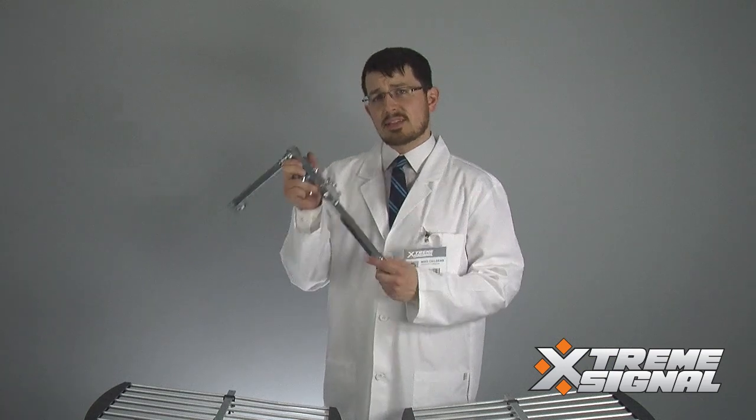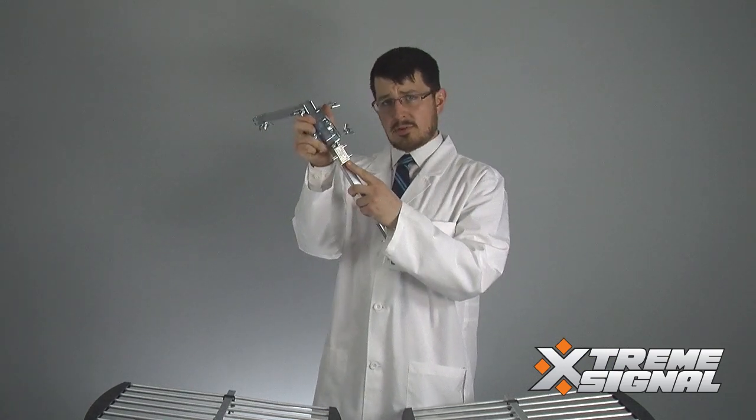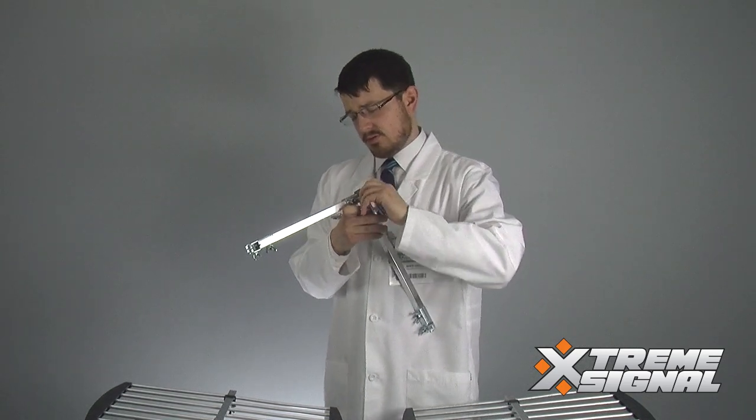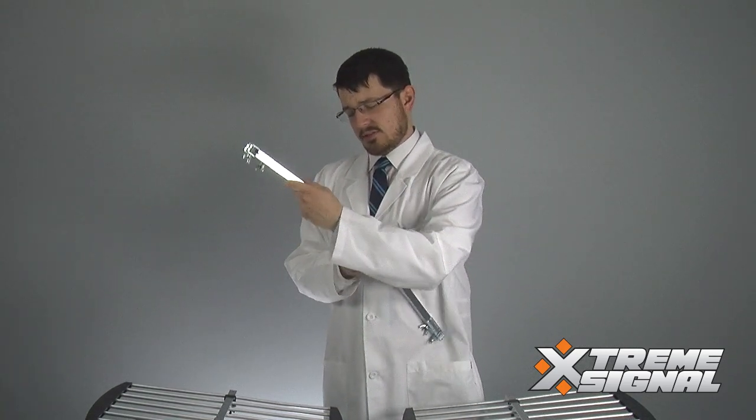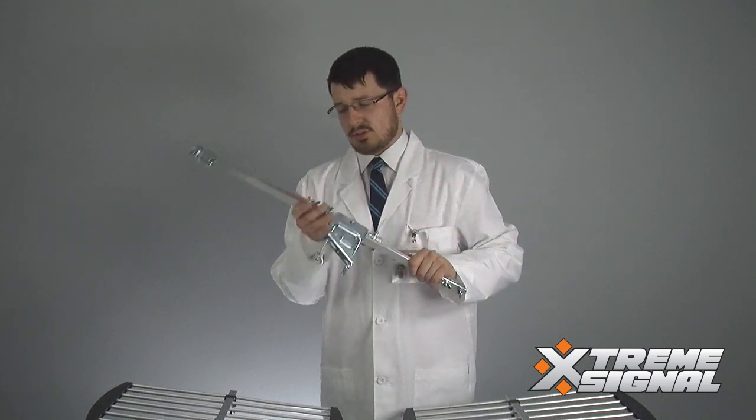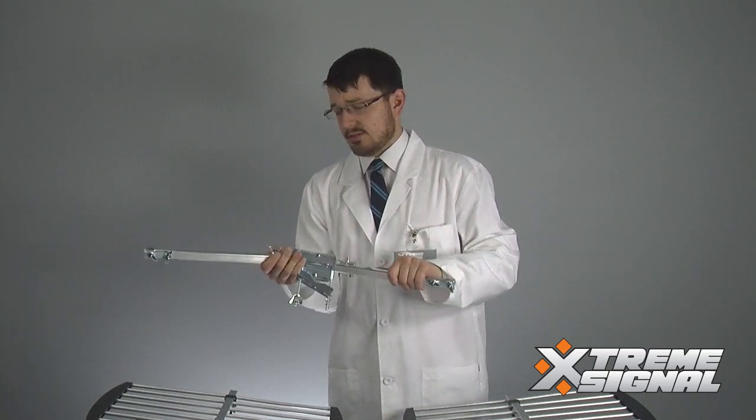Next, grab the second mounting assembly, the one with the splitter on it right here. And I'm going to loosen this wing nut, enable us to straighten this out. Now this is the part of the antenna you use to adjust the angle of both sides of that, so take note of that.